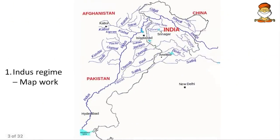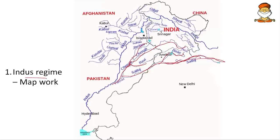We start with the Indian Indus regime. We are familiar with the Jhelum, Chenab, Ravi, Beas, and Sutlej. The Chenab river flows, then Beas joins Sutlej, which again joins the Chenab, and then Jhelum and Ravi also flow and join the Chenab. The Sutlej river exactly cuts through the middle of Himachal Pradesh.